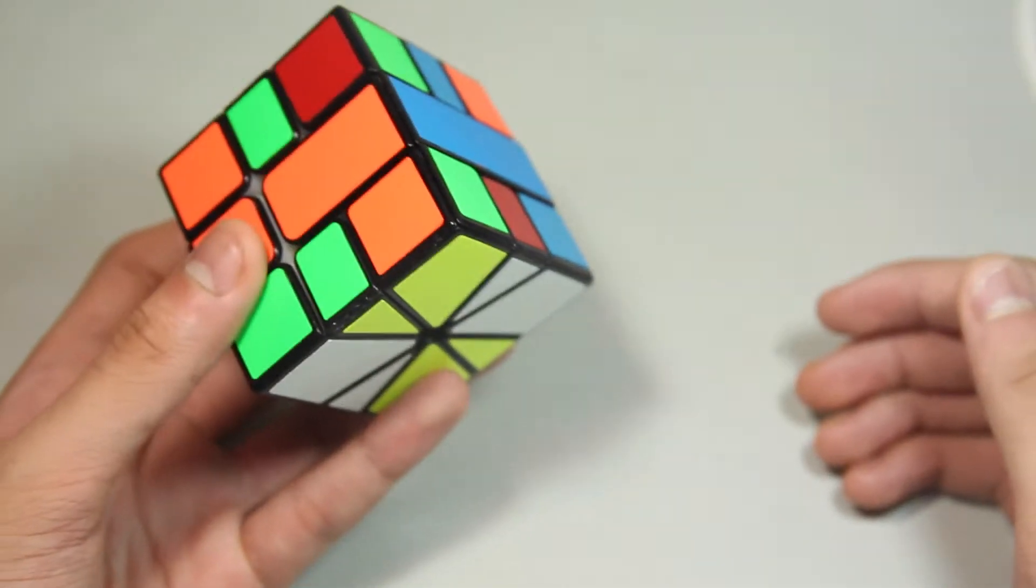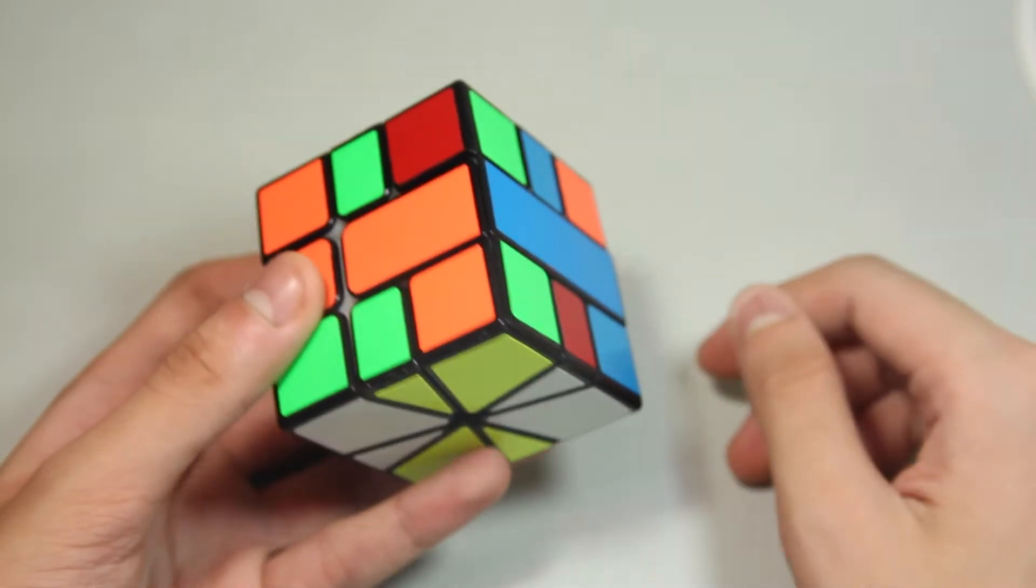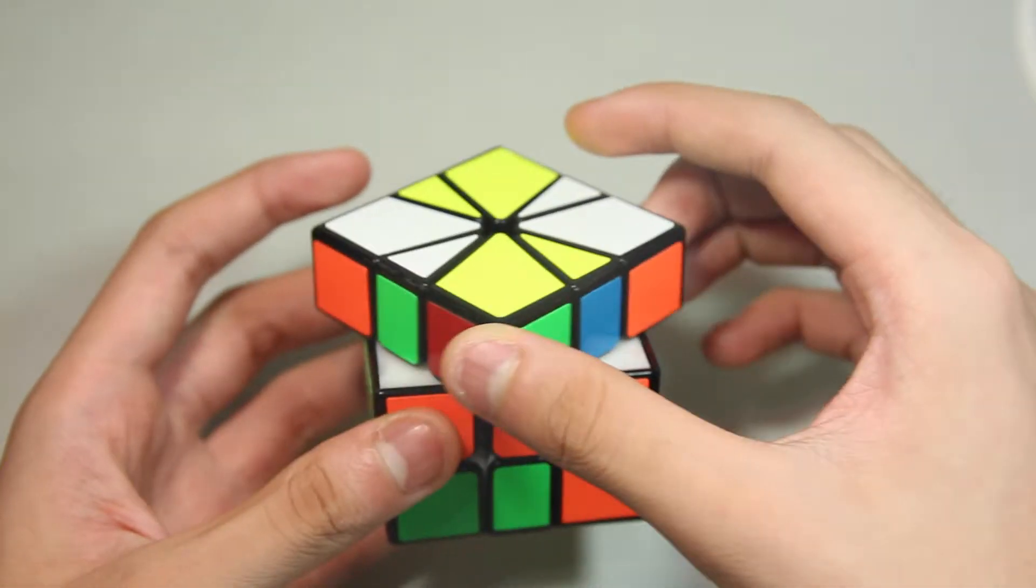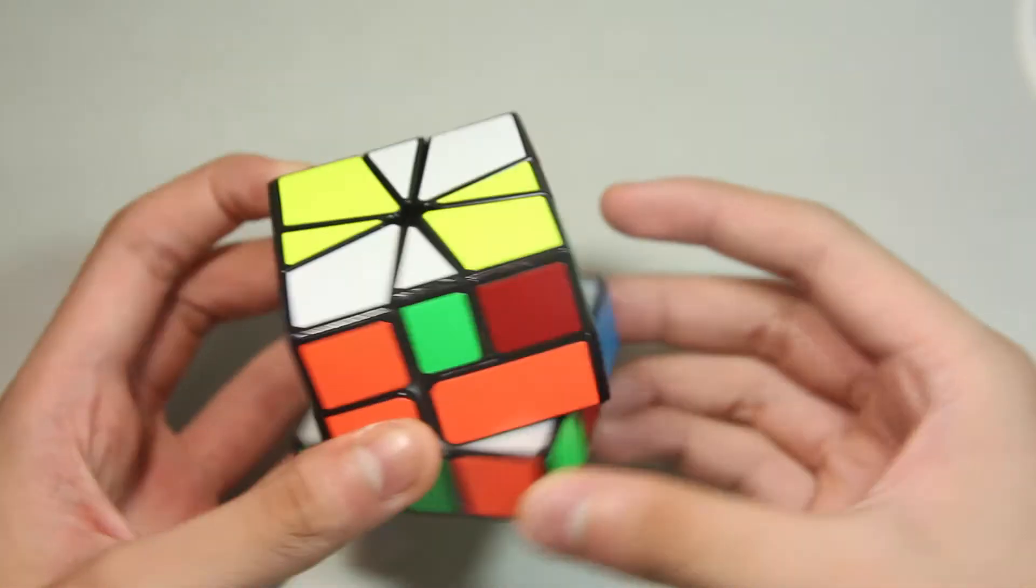So at all times throughout the solve after cube shape, you just want to misalign the cube by one or negative one.